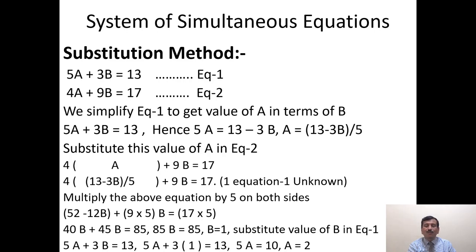4A + 9B = 17. We put the value of A and simplify. Resultantly, we get 5A = 10 and A = 2. Typically both methods are used, but generally the elimination method is more popular. In the illustration, we'll understand the advantages of the elimination method. Thank you.